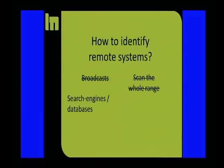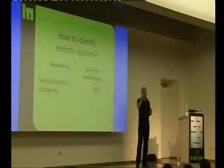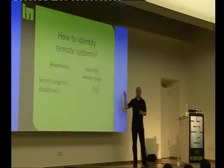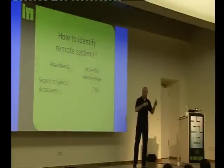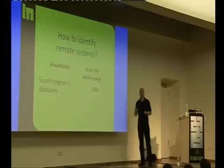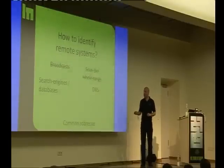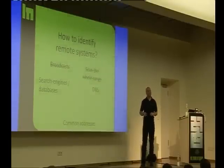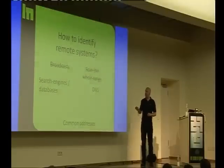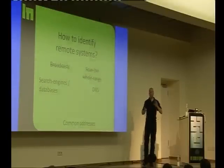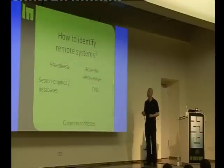We have search engines and databases — we can Google for IPv6 addresses. We have DNS, where we can explicitly ask for IPv6 addresses, like www.google.com — give me the IPv6 address. And we have common addresses. Combining these two approaches gives a pretty good view of what is really out there.